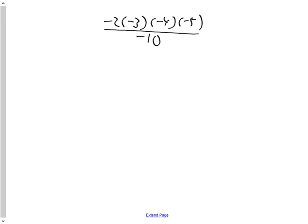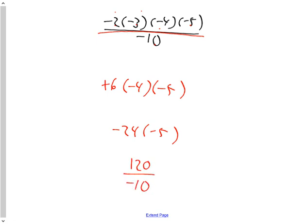Our last question is an integer question. It says this times this times this times this all divided by this. So negative two times negative three is positive six. Positive six times negative four is negative twenty-four. And negative twenty-four times negative five is positive one-twenty. A positive one-twenty divided by negative ten. Well, one-twenty divided by ten is twelve. And a positive divided by a negative is a negative. Negative twelve.